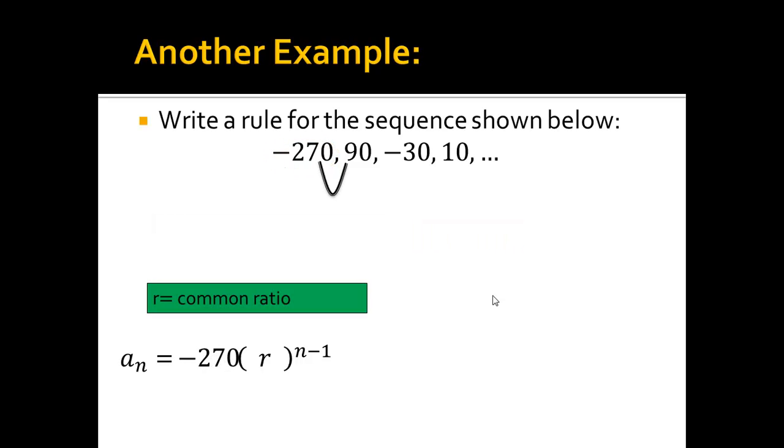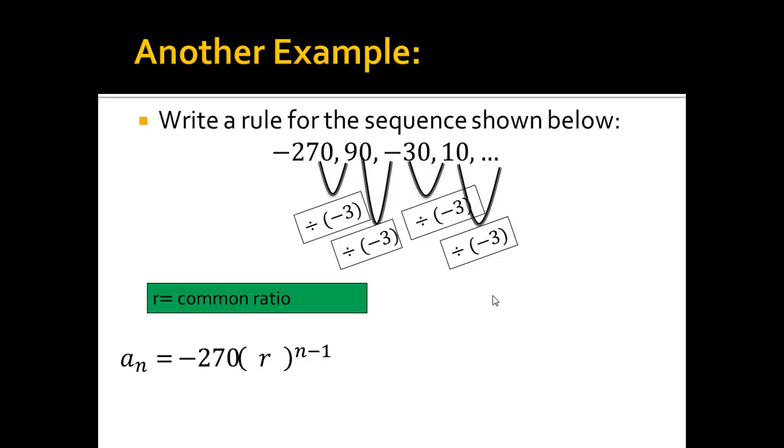Now, my common ratio. I'm actually dividing by negative 3 every time. All right, and maybe it's a little weird for you to look at first, but you'll get better at noticing these patterns. So I'm dividing by 3, or I'm sorry, dividing by negative 3 every time. I know it's the negative because the signs are changing, and I know I'm dividing by 3 because, well, from 270 to 90 and then 90 to 30, 30 to 10, I'm dividing by 3.